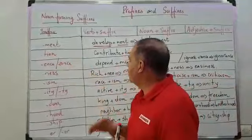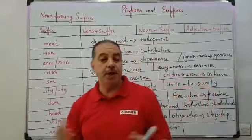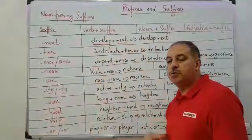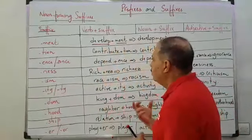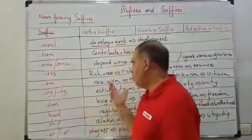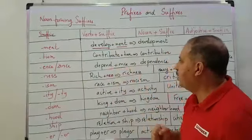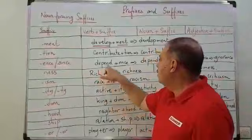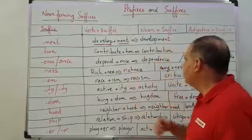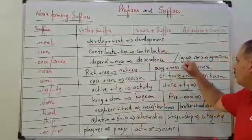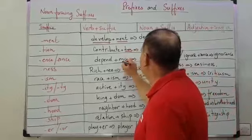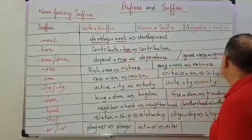We have the suffix '-tion'. For example, 'contribute' is a verb. We add the suffix '-tion' and we have 'contribution'. We also have the suffixes '-ence' and '-ance'. For example, 'depend' is a verb. We add the suffix '-ence' and we have 'dependence'. Another verb: 'ignore' plus '-ance' gives us 'ignorance'.